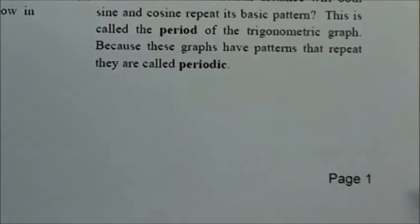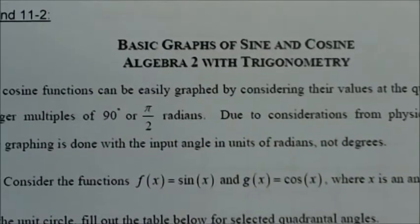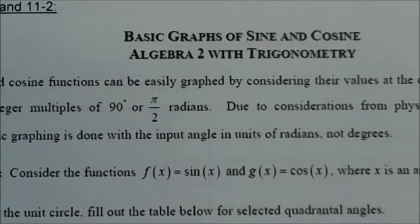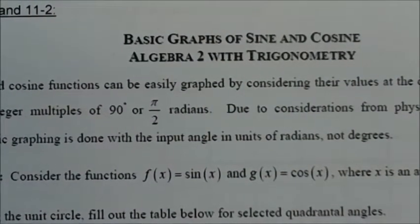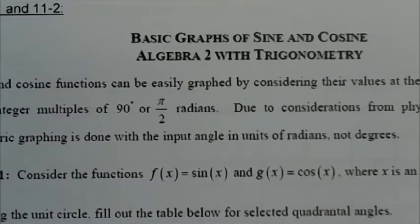Today we're on page 1 of our chapter 11 notes packet. Chapter 11 is graphing trig functions, so we'll be graphing sine and cosine curves, as well as some tangent and inverse trig functions. Starting off with the basic graphs of sine and cosine: the sine and cosine functions can be easily graphed by considering their values at the quadrantal angles — those that are integer multiples of 90 degrees or π/2 radians. Due to considerations from physics and calculus, most trig graphing is done with the input angle in units of radians, not degrees.